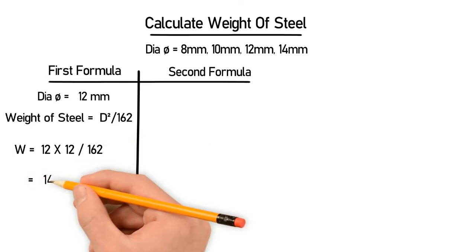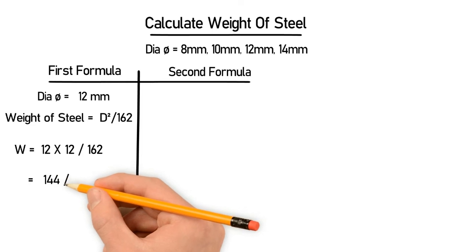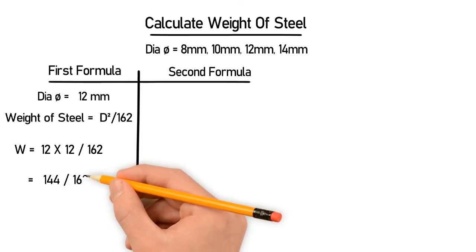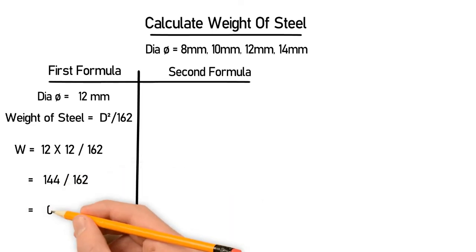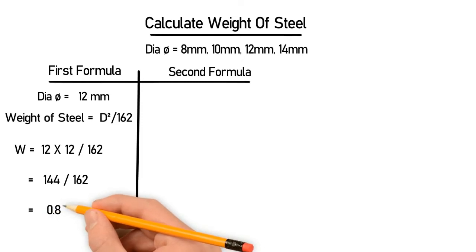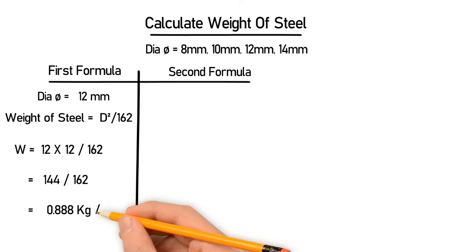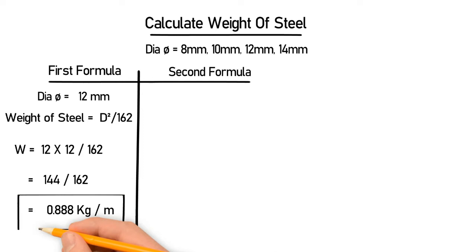That gives you 144 divided by 162. After calculating this, you will get the final result which is 0.888 kilogram per meter. So this is the weight of one meter steel with diameter equal to 12mm.